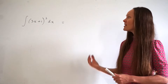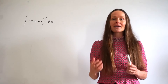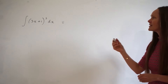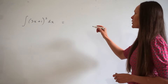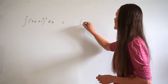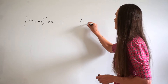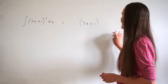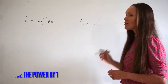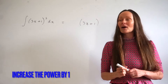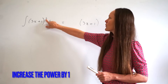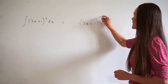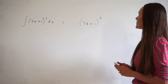The part inside the brackets remains the same, so I'm going to start by writing that out: 3x plus 1. The first step is to increase the power by 1, so 5 plus 1 is 6 — that's the new power.